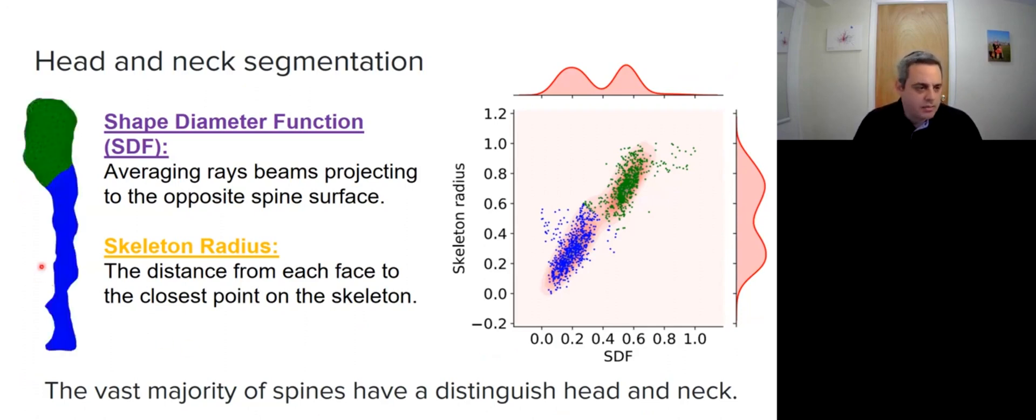For each triangle or face of the mesh, we calculated the SDF and the skeleton radius, resulting in the scatter plot at the right. Each dot represents a single face or triangle of the spine.